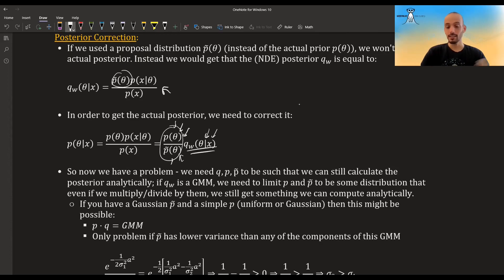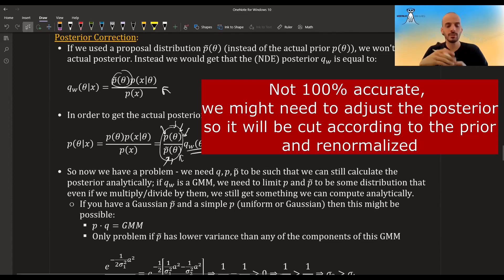So indeed this was the reason why Papamakarios and Murray limited their density estimator—their q—to be a GMM, and then they limited the proposal to be a Gaussian and the prior to be either Gaussian or uniform.